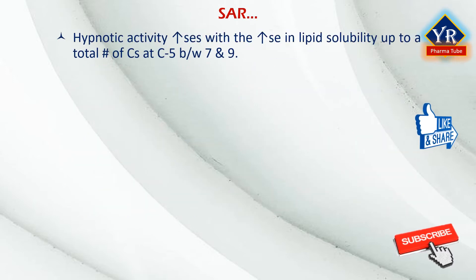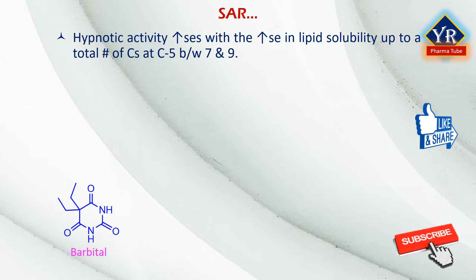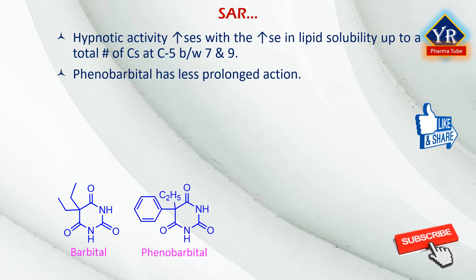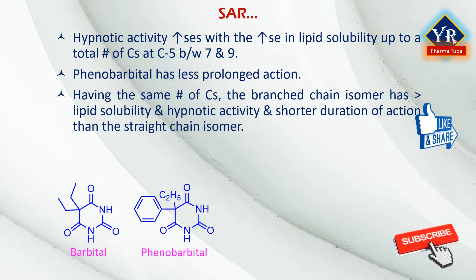Hypnotic activity increases with lipid solubility until the total number of carbon atoms for both substituents at C5 is between 7 and 9. Increasing the sum beyond this decreases hypnotic activity despite further increases in lipid solubility. Barbiturates with short side chains, like barbital, have the longest duration of action due to slow CNS entry. Phenobarbital has a less prolonged action because of a greater number of carbon atoms. Within the same series, the branched-chain isomer has greater lipid solubility, greater hypnotic activity, and shorter duration of action than the straight-chain isomer.